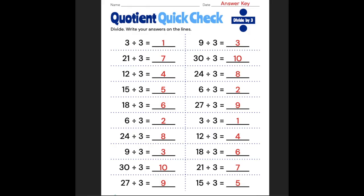Let me tell you how we get these answers. We can check by doing multiplication. 3 times 1 is 3. 3 times 7 is 21. 3 times 4 is 12. 3 times 5 is 15. 3 times 6 is 18.